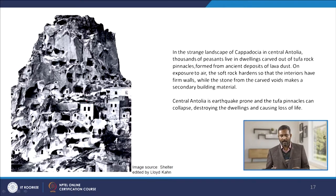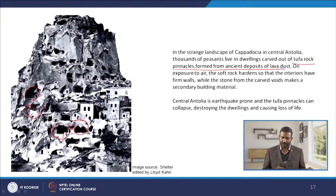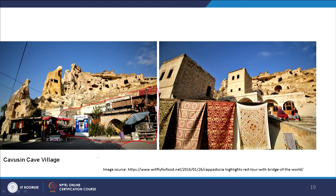For instance, in Cappadocia in central Anatolia, peasants live in rock pinnacles formed from ancient deposits of lava dust. As exposure to air hardens the soft rock, interiors become firm, and people began dwelling in these structures. The fault line passes through Turkey, making it an earthquake-prone area. These pinnacles often collapse, destroying the dwellings — such as the Greek village of Kavacin, which was demolished. Despite being given the opportunity to resettle elsewhere, people came back because tourism, which forms their livelihood, is an important factor.